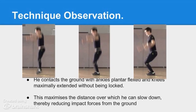Also good is the way he prepares to land. He contacts the ground with ankles plantar flexed and knees that are maximally extended without being locked. This is good because it maximises the capacity of these joints to reduce his momentum by increasing the angular distance they can travel while doing so. This translates into a greater time over which the impact force can be dissipated, leading to less force being placed on his limbs over time as he contacts the ground. This helps him to minimise the chance of injury upon landing, as does having his knees not locked into extension, which could prove catastrophic to his ability to land safely.